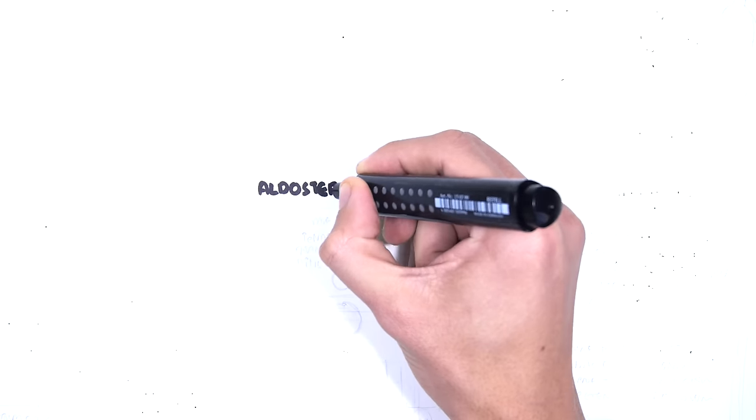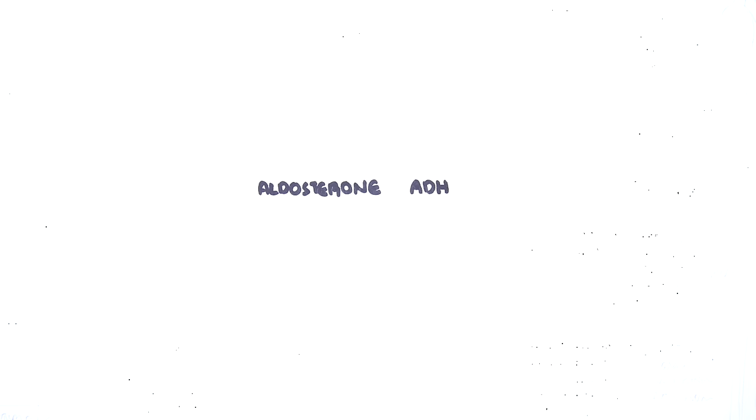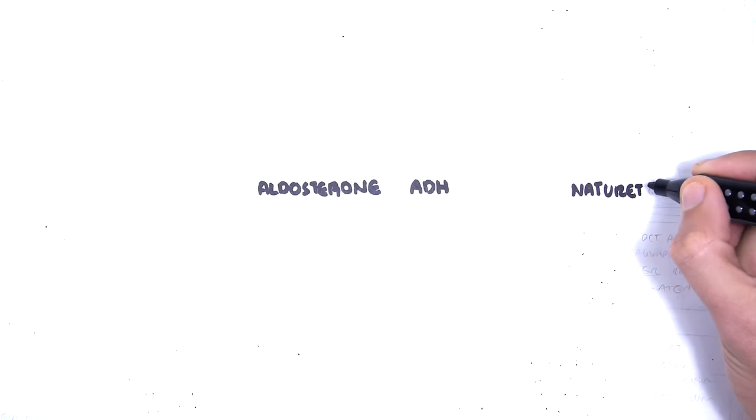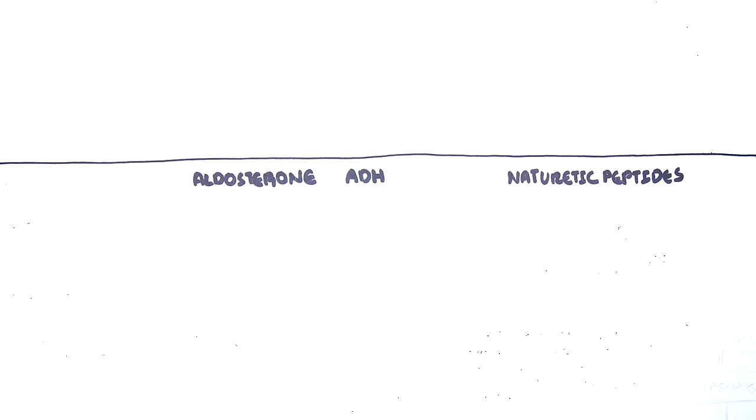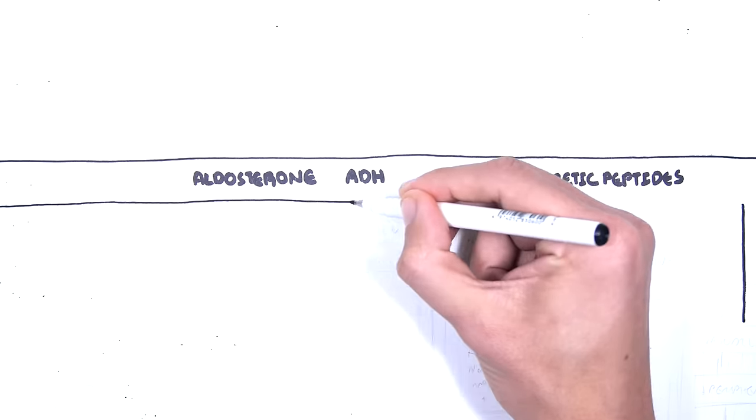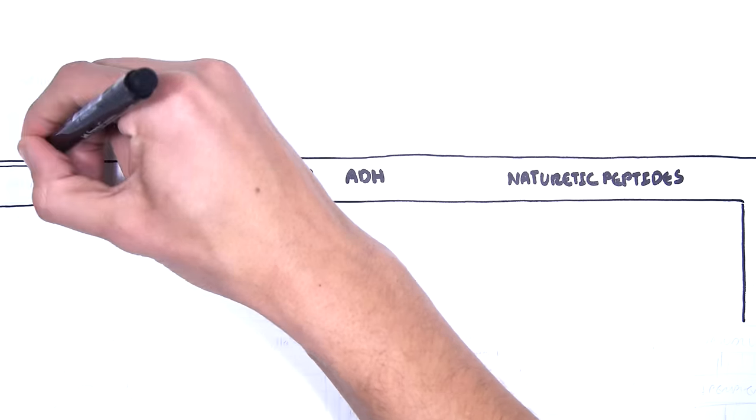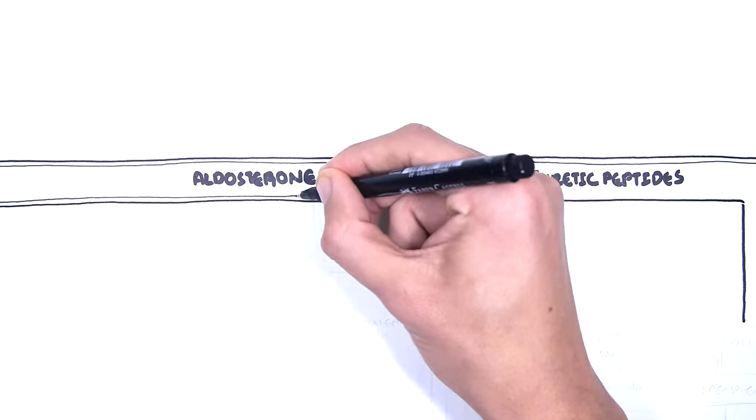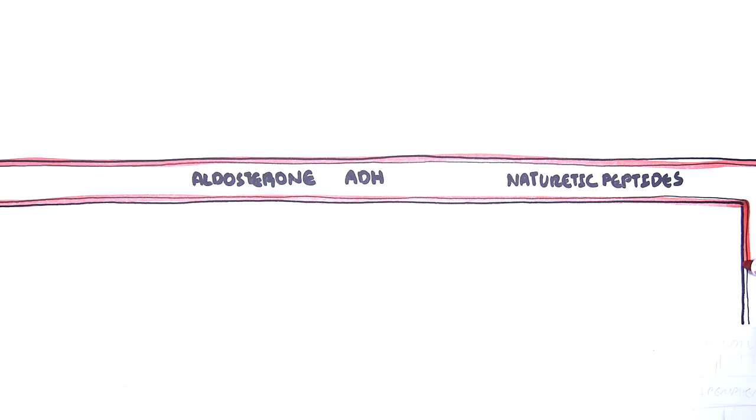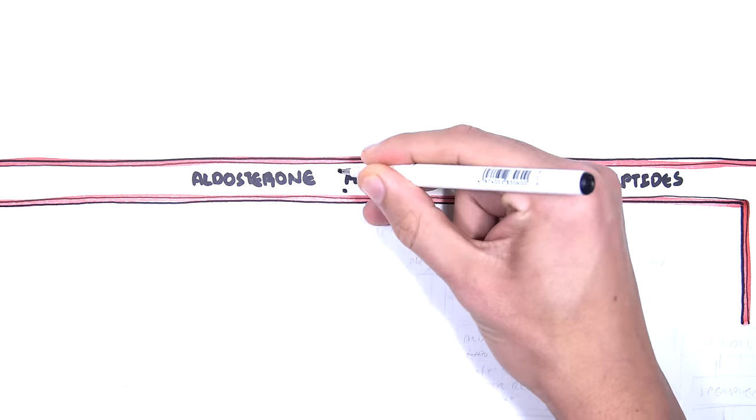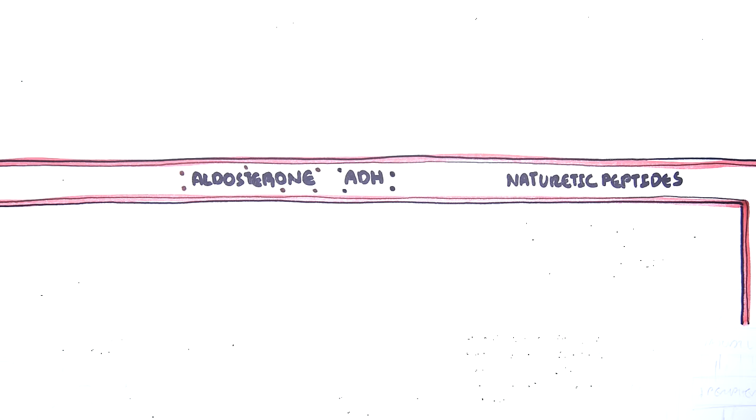These are aldosterone, antidiuretic hormone also known as arginine vasopressin, and the natriuretic peptides ANP and BNP. These hormones are released from endocrine organs or glands and travel in blood. The main source of water is from the gastrointestinal tract when we drink. The main way we secrete fluid is through urine.